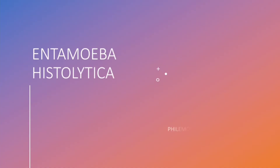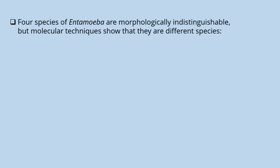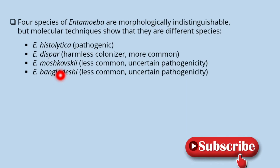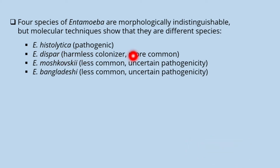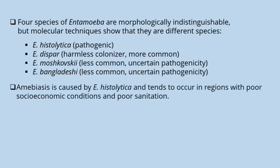Let's talk about Entamoeba histolytica. Four species of Entamoeba are morphologically indistinguishable, but molecular techniques show that they are different species. These include Entamoeba histolytica, which is pathogenic; Entamoeba dispar, which is a harmless colonizer and more common; Entamoeba moshkovskii, which is less common and whose pathogenicity is uncertain; and Entamoeba bangladeshi, which is also less common and of uncertain pathogenicity.